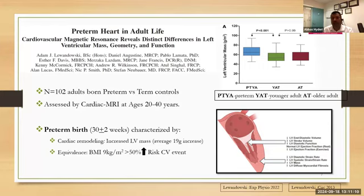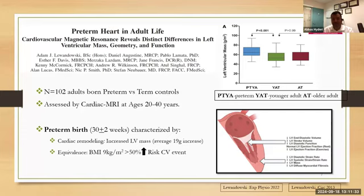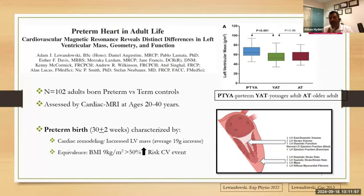In summary, Adam told us that the hearts of preterm-born young adults are thicker, with reduced end-diastolic volume, reduced stroke volume, myocardial fibrosis, and diastolic dysfunction. The increase is about 19 grams on average. According to the Framingham Heart Study, there is a 50% increased risk of cardiovascular events just because the left ventricle was thicker. Knowing the heart anatomy is not enough — we also need to know the physiology and what happens when these hearts are pushed to their limits.